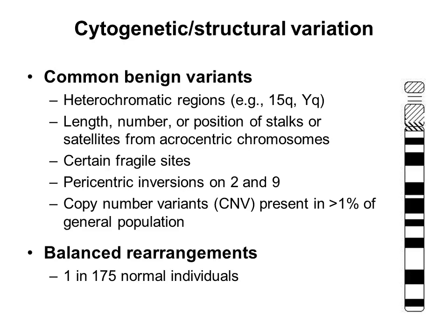There are many types of structural variants that have been recognized for many years at the chromosome level, based on G-banded karyotype studies. These include benign structural changes that occur in the general population and do not have an adverse clinical impact, such as variability in the heterochromatic regions, or the length, number, or position of the stalks or satellites on the acrocentric chromosomes. Others include fragile sites and certain common inversions. And there are some copy number variants, or CNVs, both gains and losses of chromosomal material, that are common in the general population and are considered to be benign.